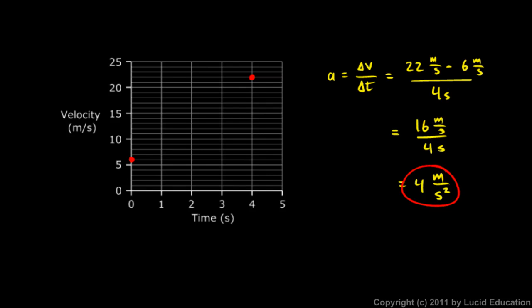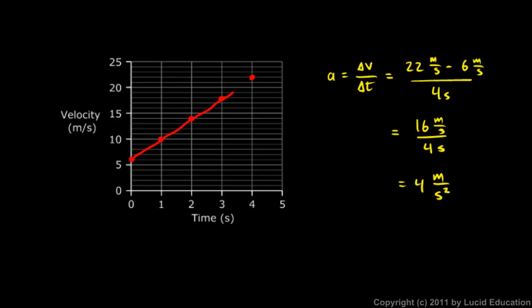That number, 4 meters per second per second, is going to come in handy in making this graph, because we know the speed increases by 4 meters per second each second. At the beginning it was moving at 6 meters per second. After one second its speed increased by 4, so it's gone from 6 to 10 — plot that point. After one more second it's at 14, so plot the point at 2 seconds, 14 meters per second. At 3 seconds its speed would be 18 — plot that point. Then connect these points with a nice straight line, stopping at 4 seconds since we aren't told what happens after that.